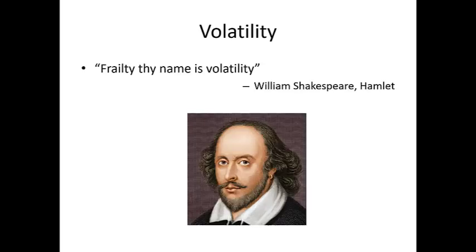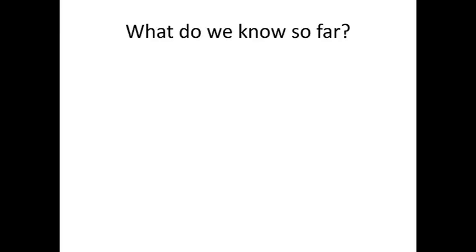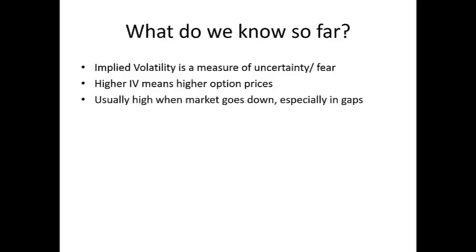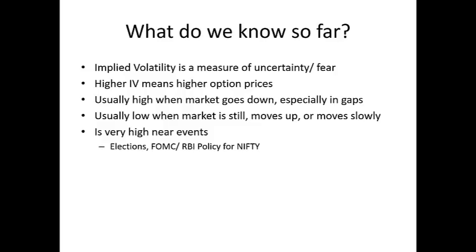Implied volatility is a measure of uncertainty and fear. Higher IV means higher option prices. Usually IV increases when the market goes down, especially in gaps. It usually decreases when the market is still, moves up, or moves slowly. It's very high near events when there is uncertainty — such as elections, a Federal Open Market Committee meeting, or RBI policy.